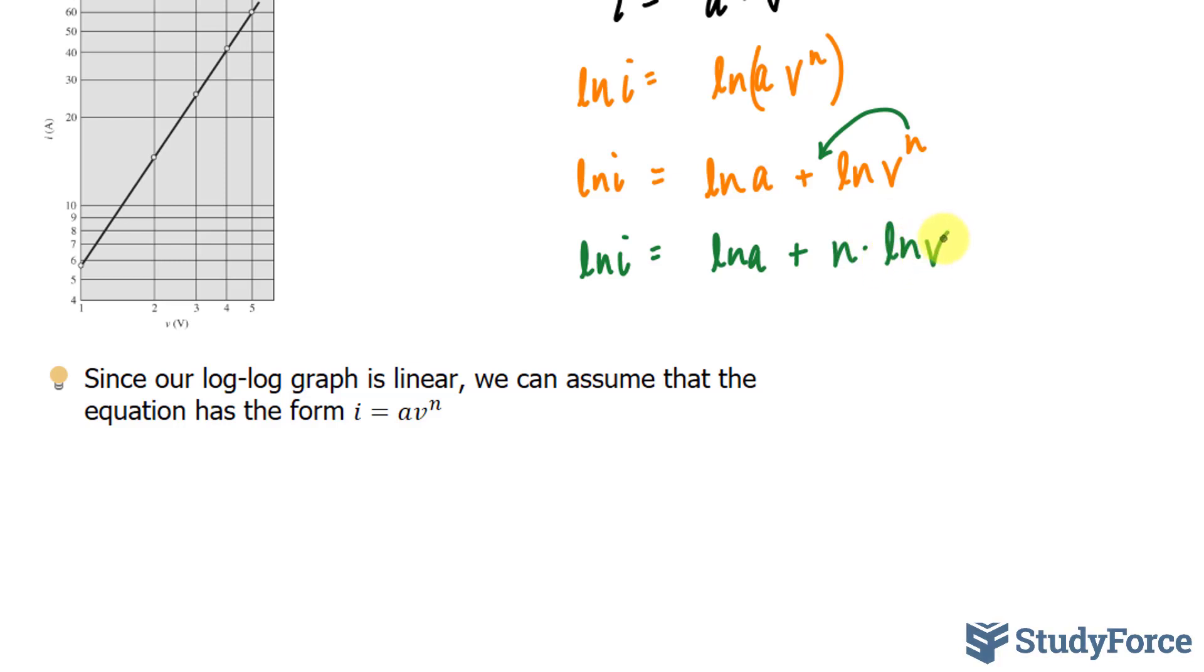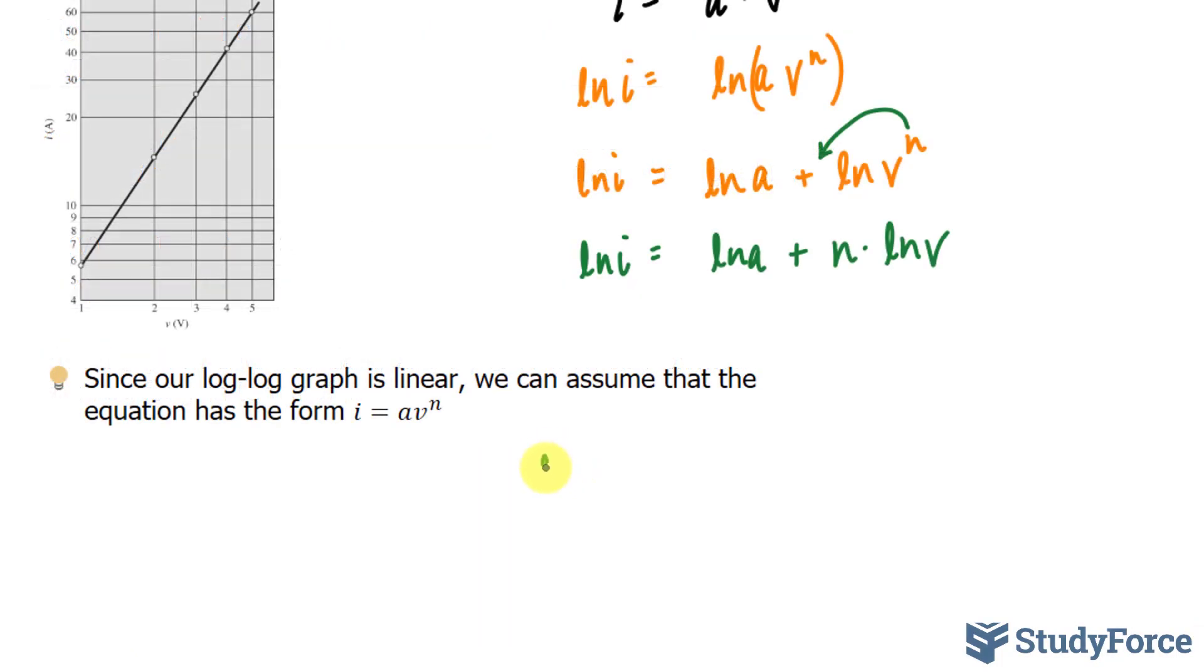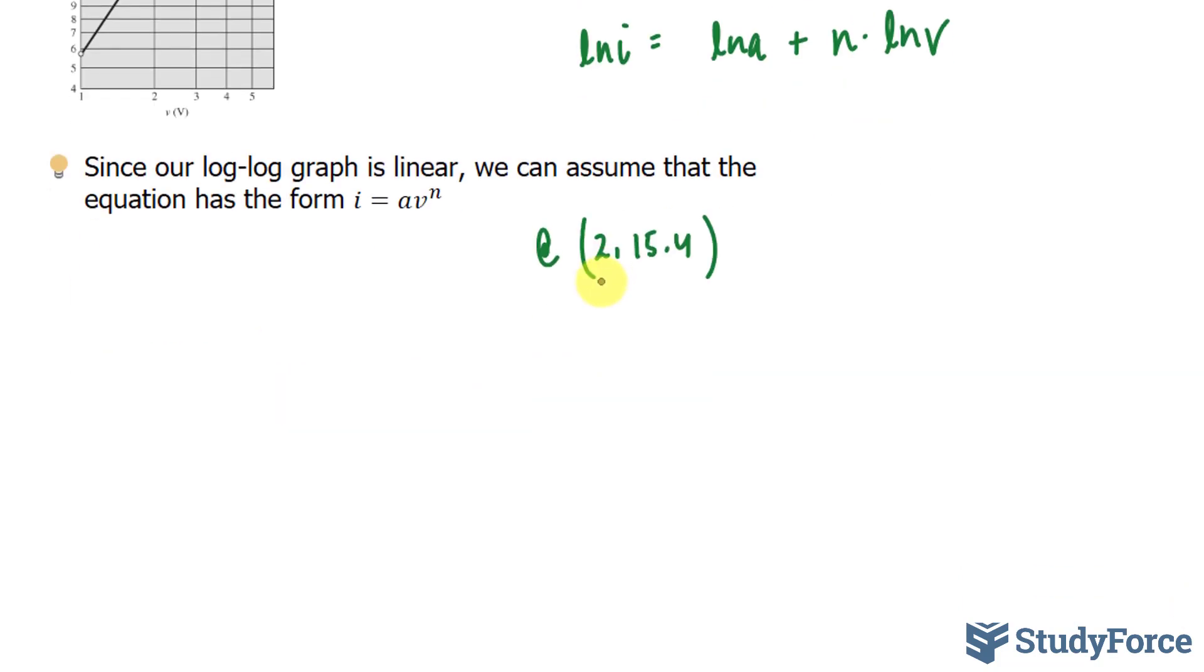What I'll do next is substitute two points from the table. Let's choose points 2 and 5 into the model that I just created below. And the reason that we're doing this is that we can simultaneously find a and n by using a method similar to solving a linear system. I'll show you what I mean below. So, at 2 and 15.4, we get the following.